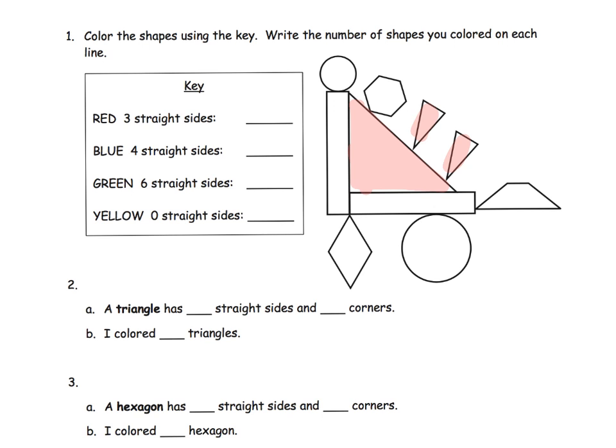Blue is four straight sides. So what is four straight sides? Well, here's a trapezoid and here's a rectangle. Here's a rectangle, and then here is a rhombus. How about green? Six straight sides. We got this hexagon right here, and then the yellow would be zero straight sides. So we've got a circle here and a circle there.